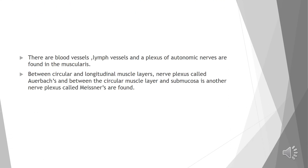There are also blood vessels, lymph vessels, and a plexus of autonomic nerves found in the muscularis. The autonomic nerve plexus between the circular and longitudinal muscle layers is called Auerbach's plexus, and the nerve plexus between the circular muscle layer and the submucosa is called Meissner's plexus.